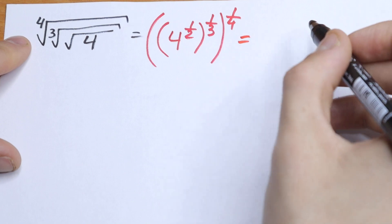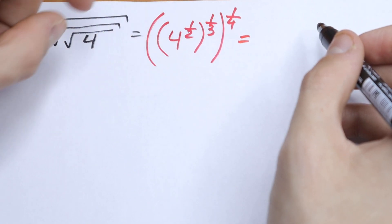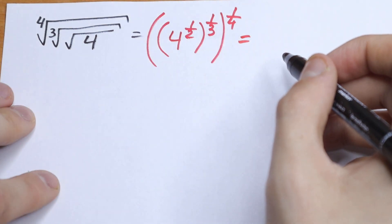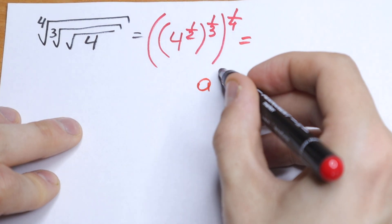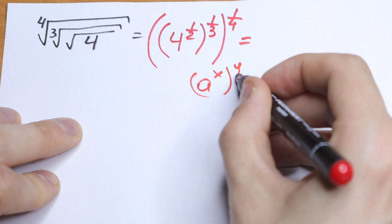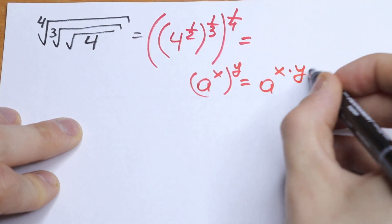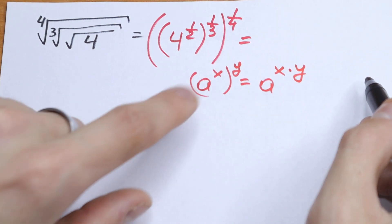So, what are we going to do next? Take a look, we have very big powers, so we can use a rule right here. If we have a to the power x raised to the power y, we can write it as a to the power x times y. So, we can just multiply our powers.